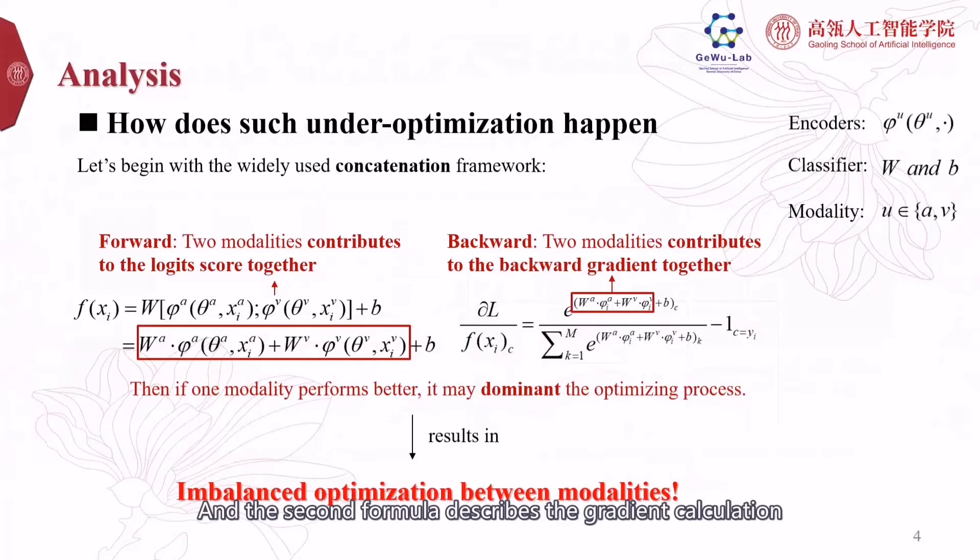And the second formula describes the gradient calculation in the backward process. Similarly, the gradient is also calculated according to the addition of two specific parts.